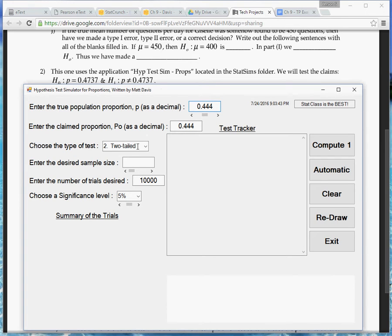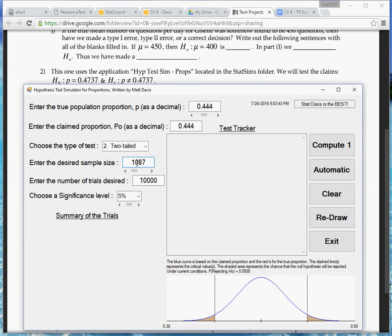It says does not equal, so that would be a two-tailed test. If it was left or right, we have those options there. For the sample size, I said I was going to use the same thing, which is 1087. And for the number of trials, instead of all those 7s, I'll do 5s.